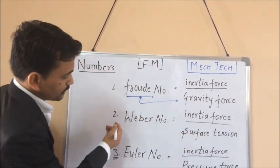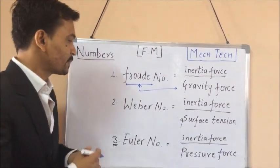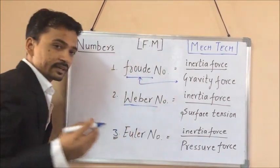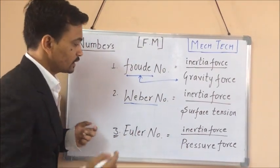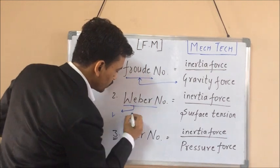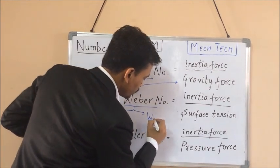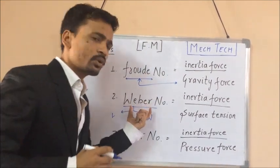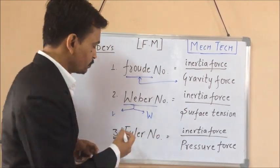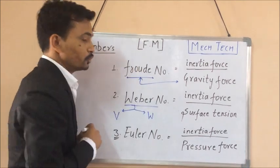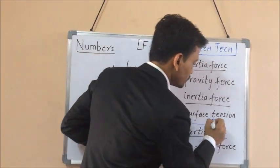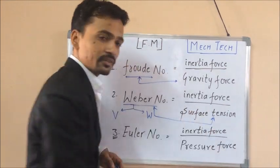Let's go to the next one — the WEBER NUMBER. Just think about Weber writing his own name. We would really get confused about which alphabet to start his name with — V or W. So Weber was always in tension while writing his own name, whether it should start with V or W. That's why this number is related to SURFACE TENSION.